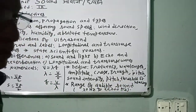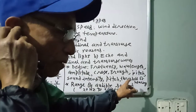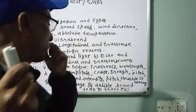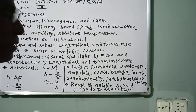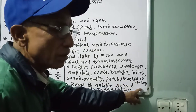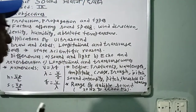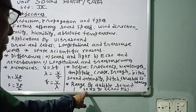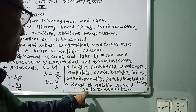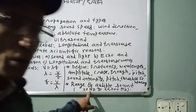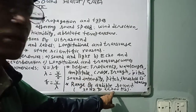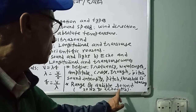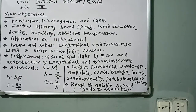Threshold of hearing is the minimum intensity of sound which can be perceived or received by a normal human ear — approximately 10 to the power minus 12 watts per square meter. Infrasound is that sound which has frequency less than 20 hertz. Ultrasound is the sound which has frequency more than 20 kilohertz or 20,000 hertz. Audible sound ranges from 20 hertz to 20,000 hertz.